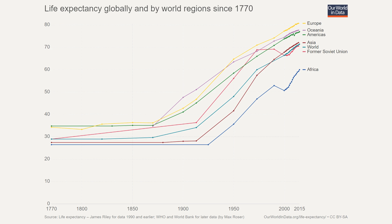Life expectancy has also increased both globally and by world region over the last two centuries. Two centuries ago we used to live somewhere between 25 and 35 years. Today, even in Africa we live more than 60 years, and the global average life expectancy is around 70 years old.